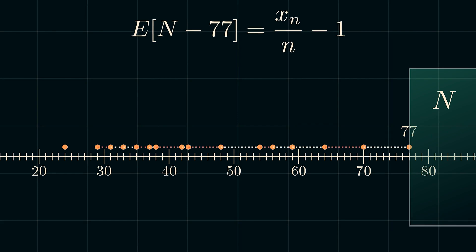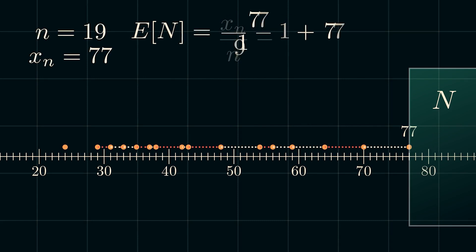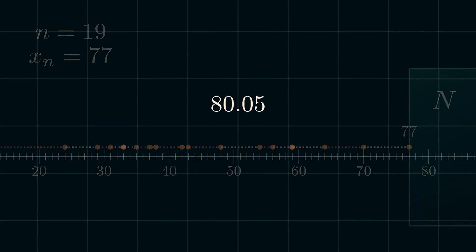Now with an estimate of the gap, n minus 77, it is easy to see that we can also estimate n, the highest serial number, by adding 77 to our previous estimate. So, plugging in n equals 19 and xn equals 77, we get 80.05. Therefore, it is estimated that the manufacturer of these tires have about 80 tire molding machines.